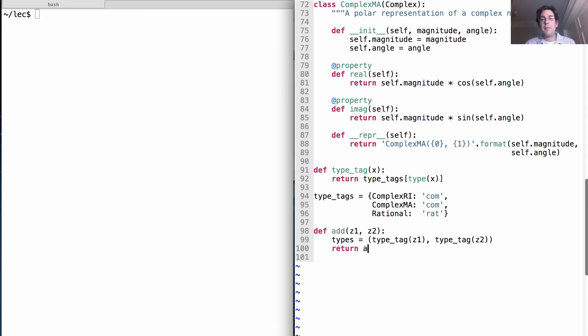And then, returning whatever we get from looking up in the add_implementations these types. And then, calling a function on z1 and z2.